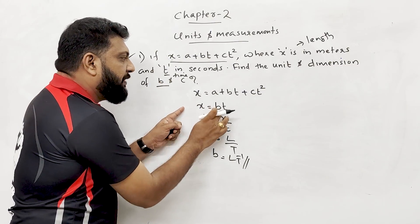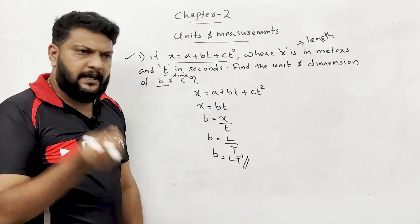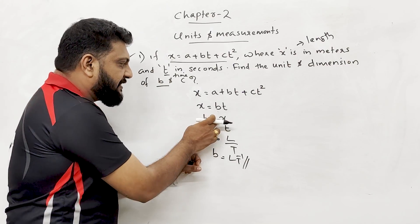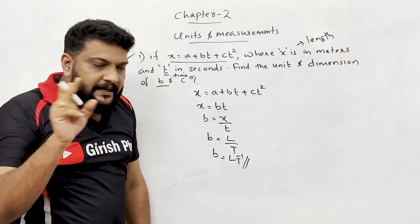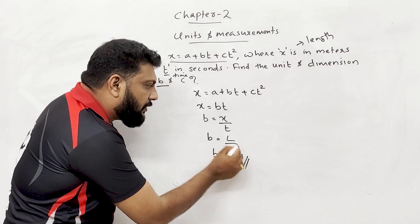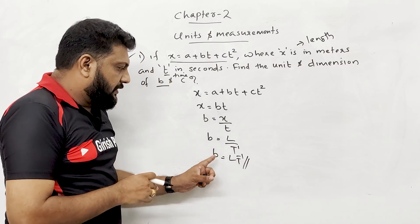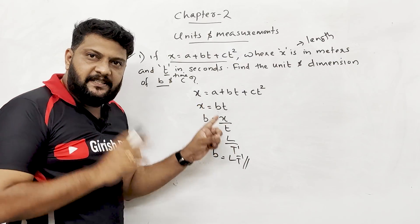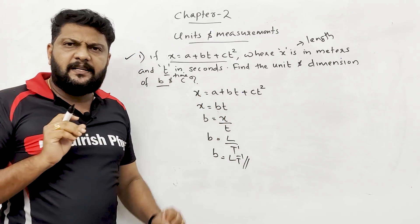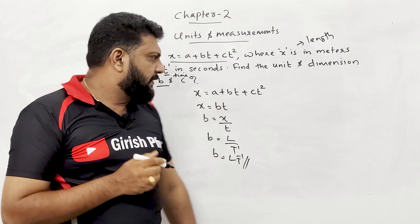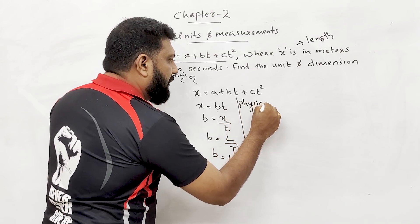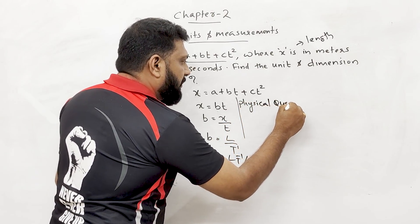From x = bt, we get b = x/t. The dimension of x is L, and t is T raised to 1, so b has dimension L divided by T, which is L·T⁻¹.